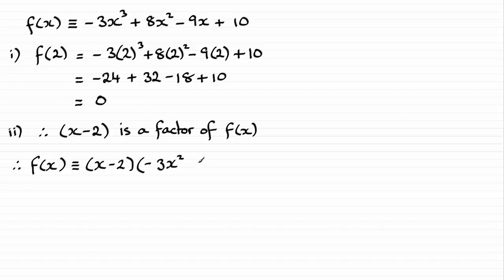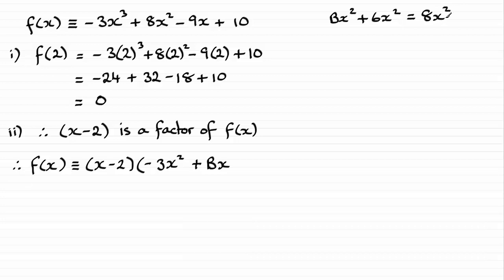The next term — the x term — is a little bit more awkward, but not that much. I'll call it plus bx. To get the 8x squared term, we get that when we multiply the x with the plus bx, giving us bx squared. We also get an x squared term when we multiply the minus 2 with the minus 3x squared, giving us plus 6x squared. We know the result should be plus 8x squared, so just by looking at this, b must equal 2. 2x squared plus 6x squared gives us 8x squared.